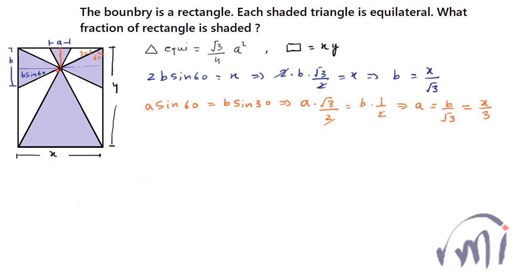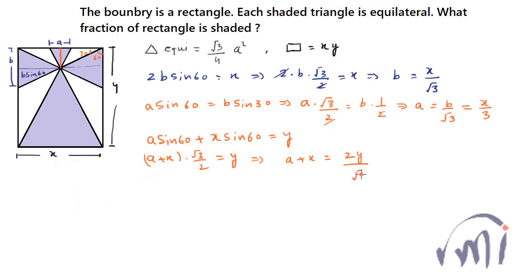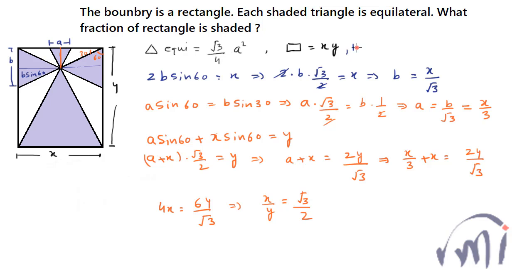The height of the small triangle plus the height of the large triangle equals y. That means a·sin60 + x·sin60 = y, or (a + x)·(√3/2) = y, giving a + x = 2y/√3. Substituting a = x/3: x/3 + x = 2y/√3, which simplifies to x/y = √3/2. So we have b = x/√3, a = x/3, and x/y = √3/2.